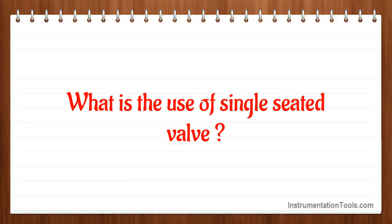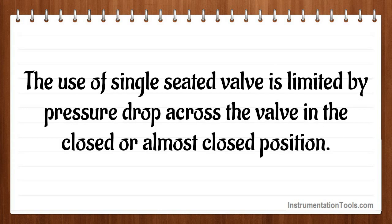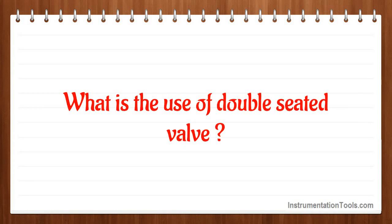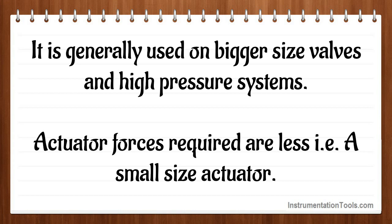What is the use of a single seated valve? The single seated valve is used on smaller sizes and in larger sizes where an absolute shut off is required. Its use is limited by pressure drop across the valve in the closed or almost closed position. What is the use of a double seated valve? In double seated valves, the upward and downward forces on the plug due to reduction of fluid pressure are nearly equalized. It is generally used on bigger size valves and high pressure systems, and actuator forces required are less, allowing a small size actuator.